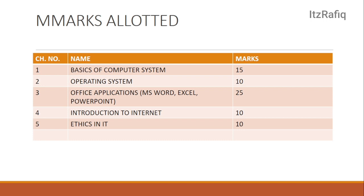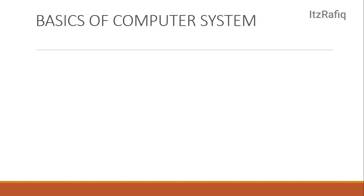Let's start with Chapter 1, which is Basics of Computer System. The first topic is what a computer is and some needs of the computer system — meaning why we use a computer system. You can learn the definition from the book, or you can write that a computer is an electronic device which we can use to solve our daily problems and can be used for different purposes. There are many uses in your book; you can learn some and even write your own.